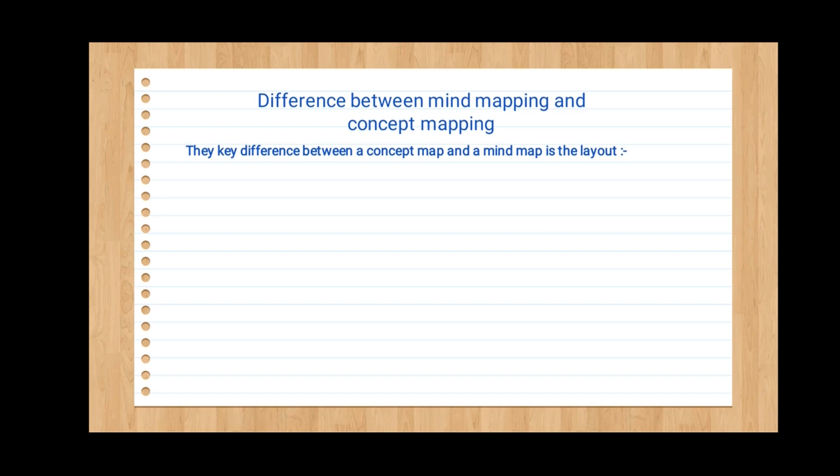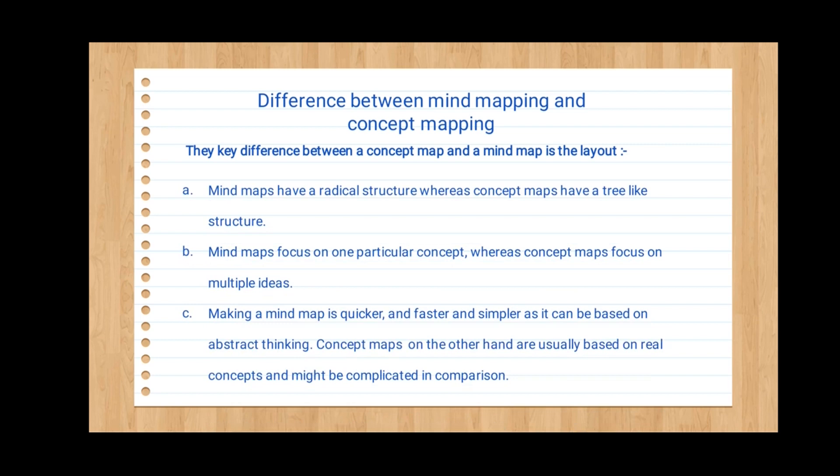Now let's look at the difference between mind mapping and concept mapping. The key difference is the layout — mind maps have a radial structure, whereas concept maps have a tree-like structure. Mind maps focus on one particular concept, whereas concept maps focus on multiple ideas in a criss-cross manner. Making a mind map is quicker, faster, and simpler as it can be based on abstract thinking, whereas concept maps are usually based on real concepts and might be more complicated in comparison.